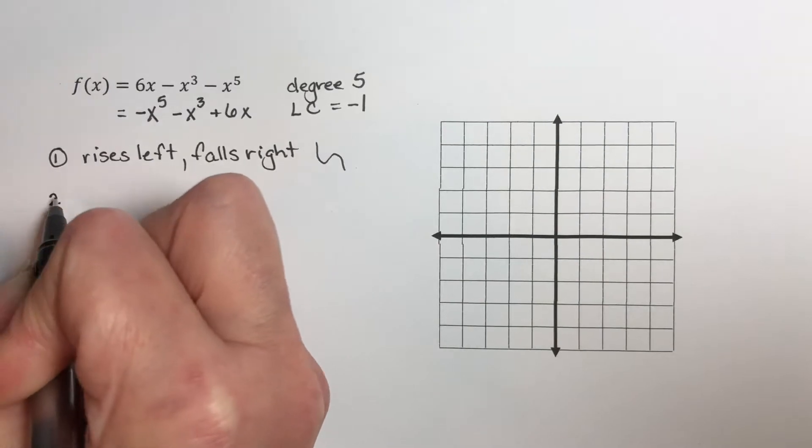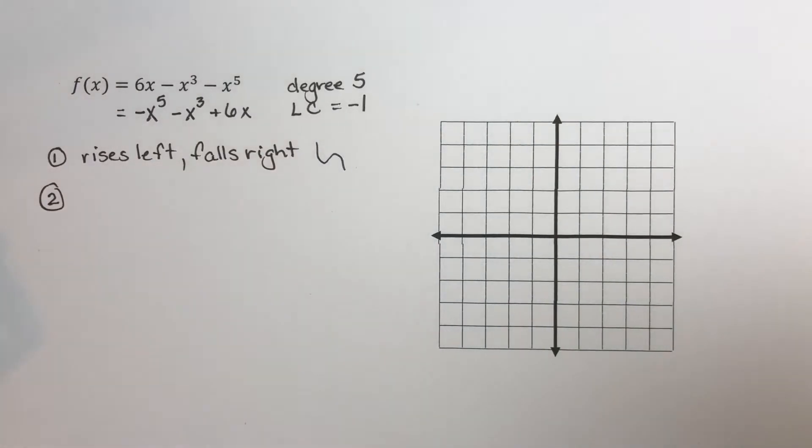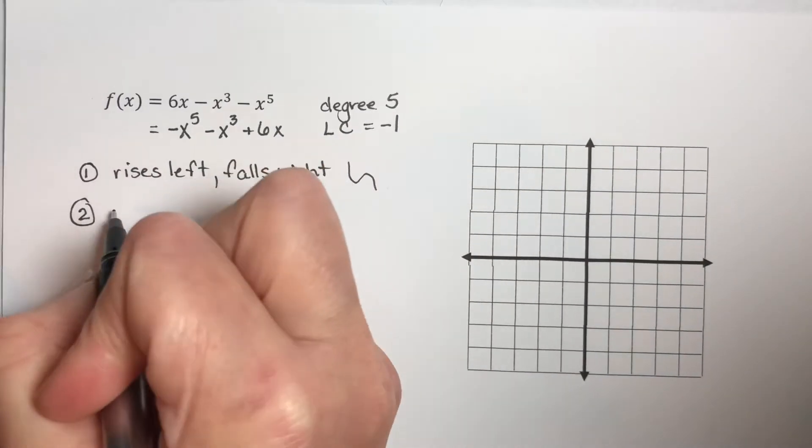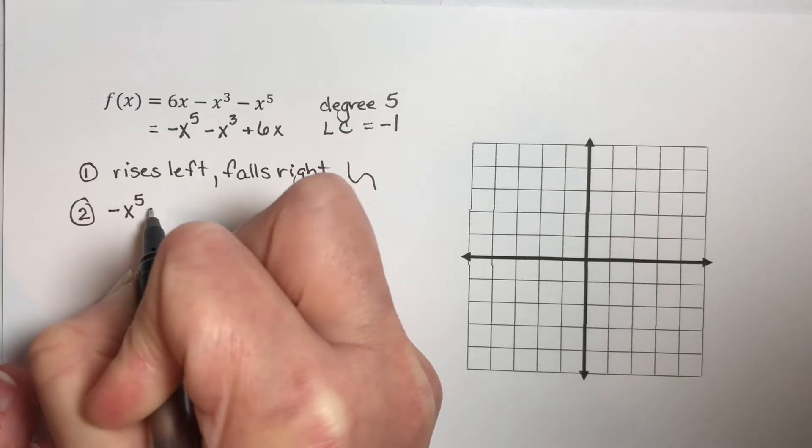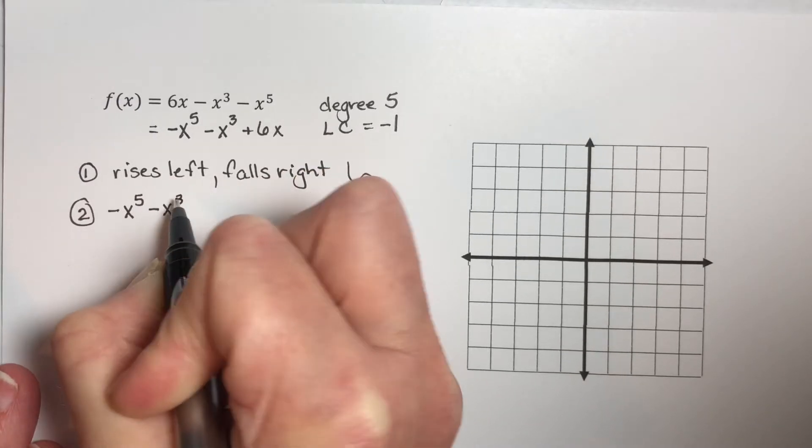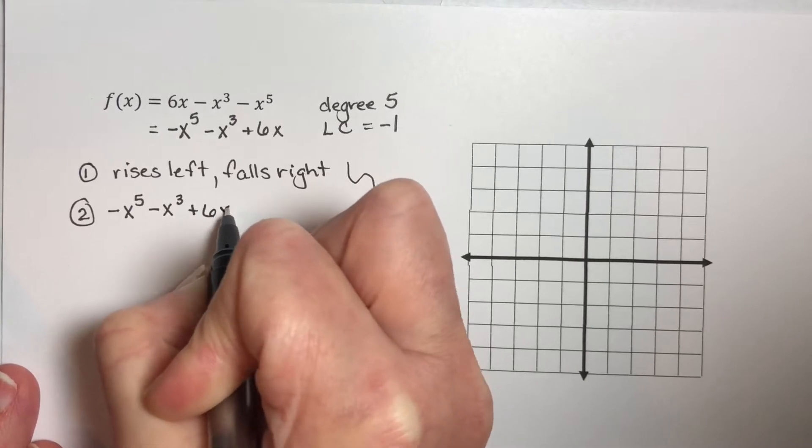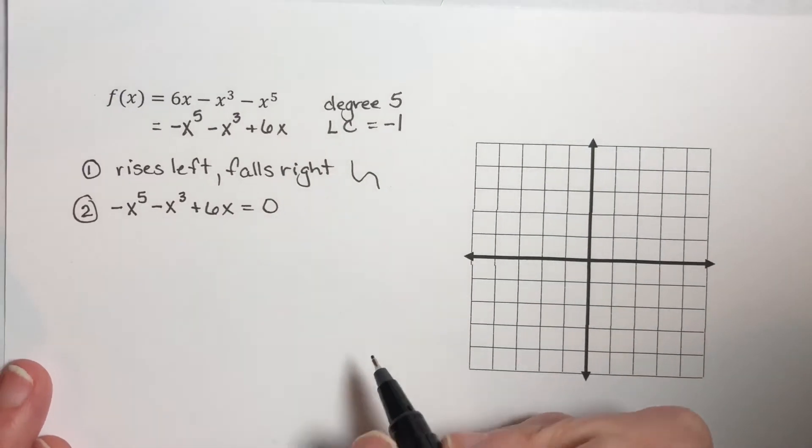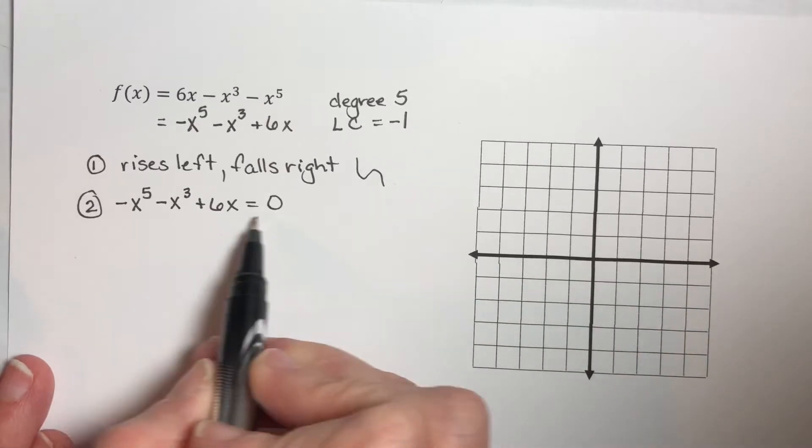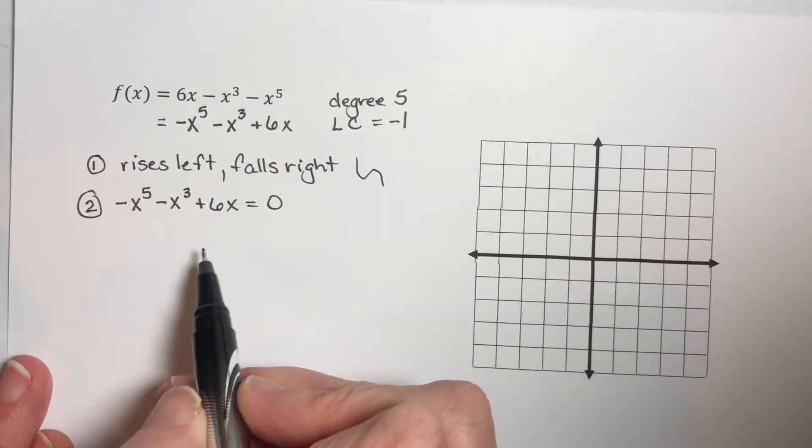Part 2. This is we should find our x-intercepts and then decide whether we touch or cross at each one. That means taking this and setting it equal to zero. Negative x to the fifth minus x cubed plus 6x is equal to zero.